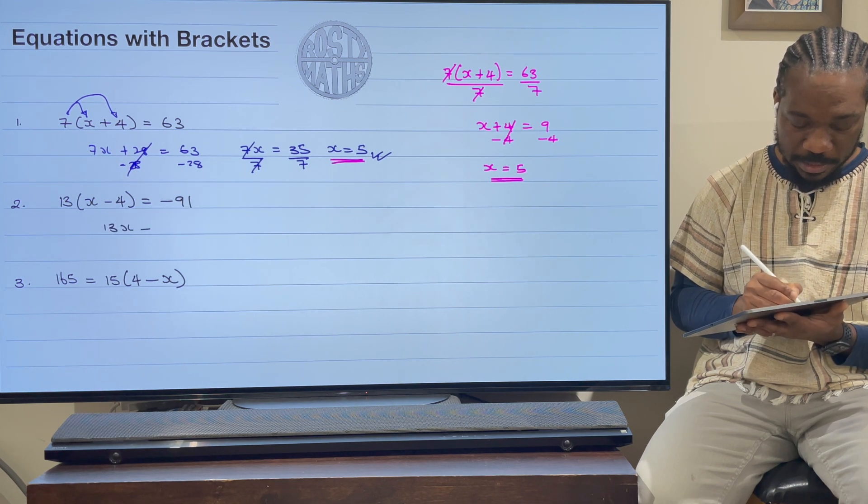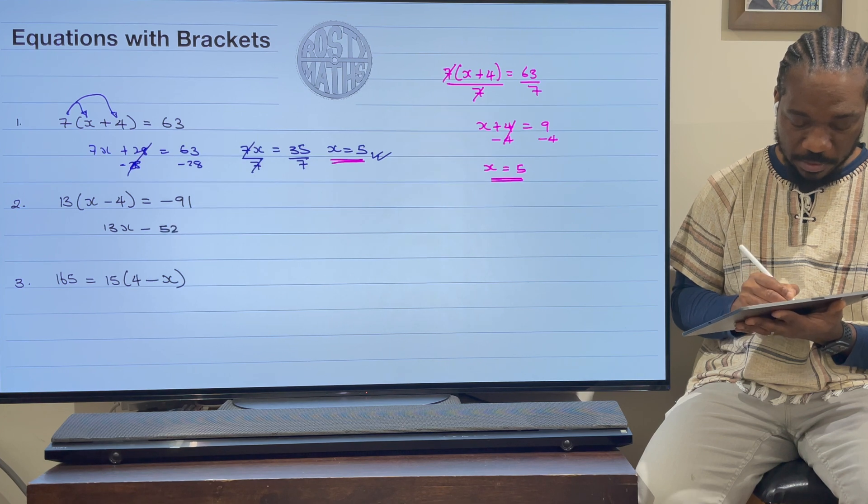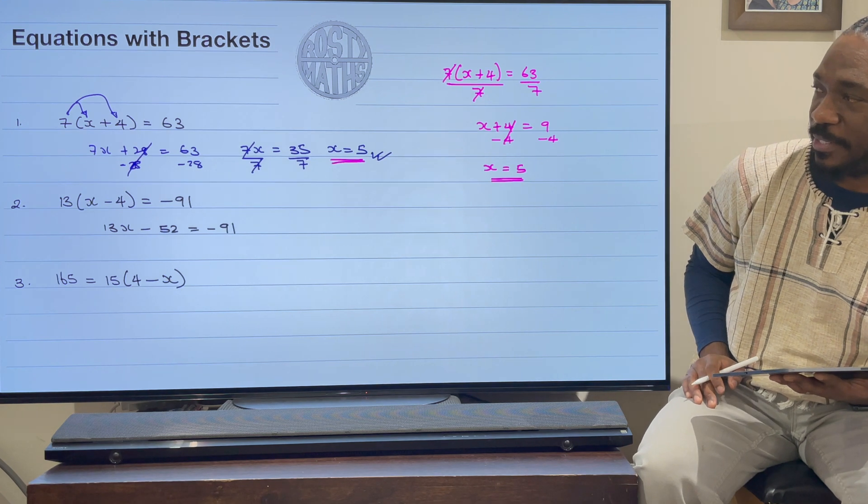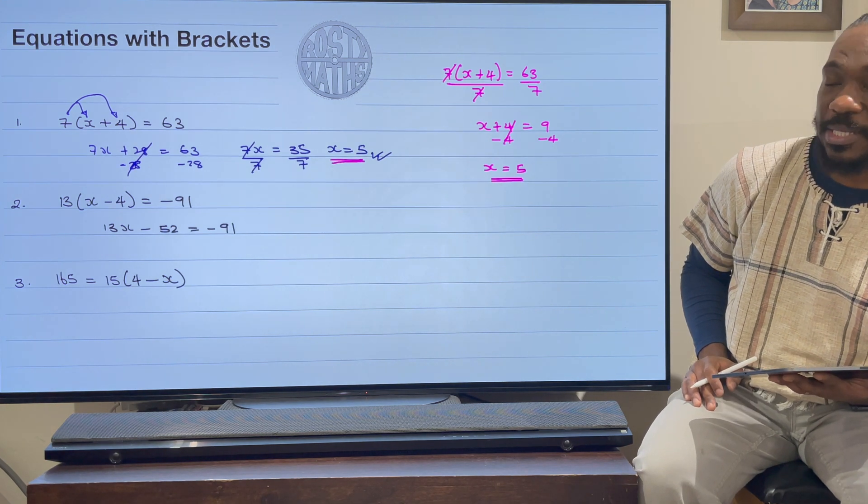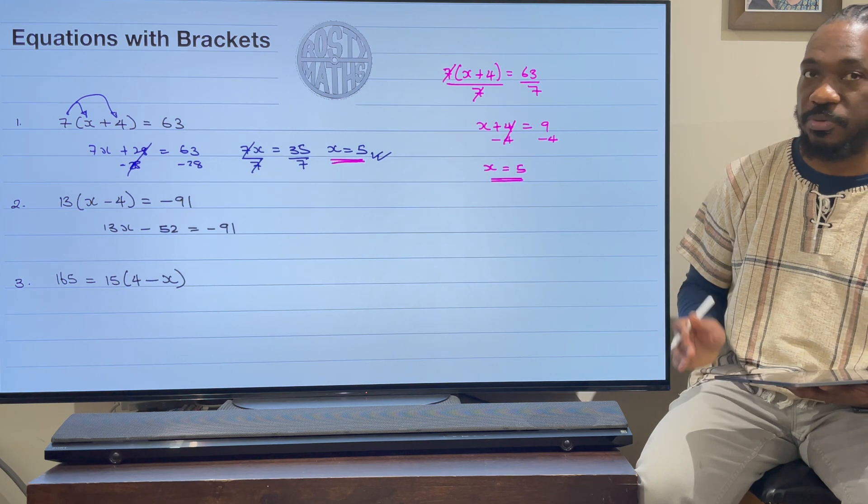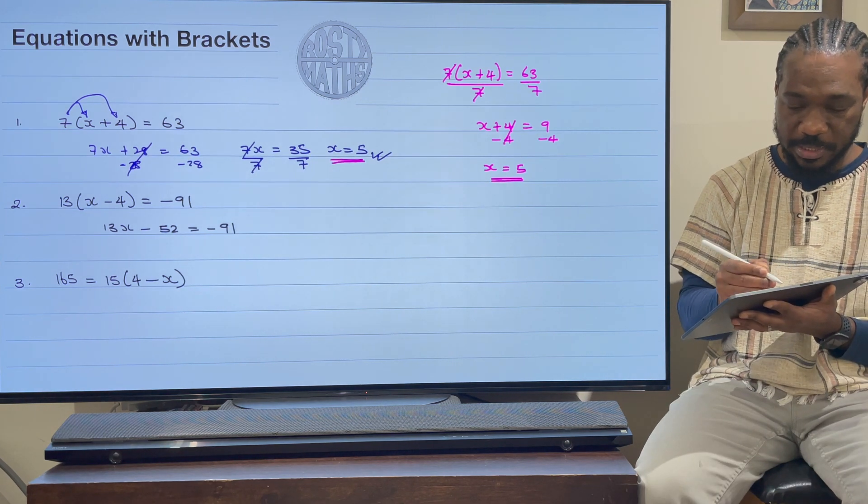All right, let's go. So I am now on the second question. So I'm expanding my brackets: 13 times x is 13x, take away 13 times 4 is 52, and that is going to be equal to -91 there.